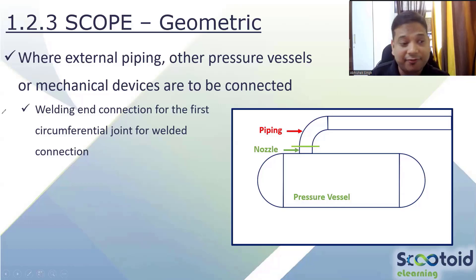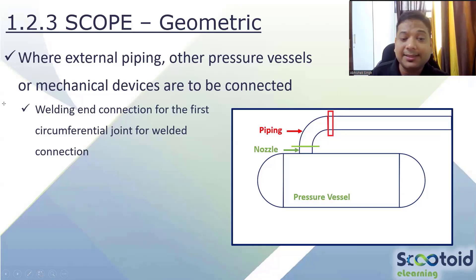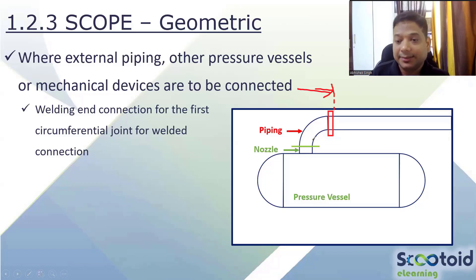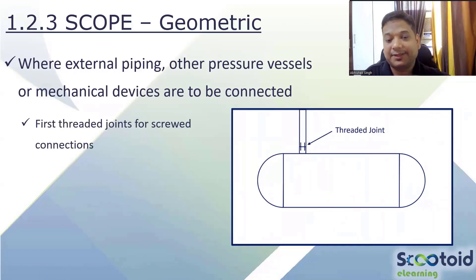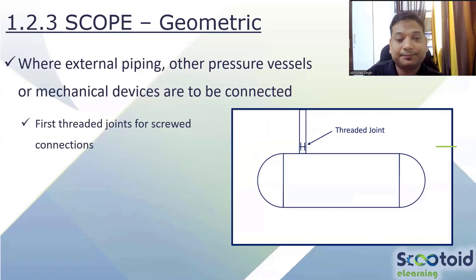The geometrical limit can be extended by the client in the UDS. If the client indicates the limit extends beyond the flange, that point becomes the limit. As per code, if nothing else is specified, the standard boundary applies. If there is a threaded connection instead of a weld or flange, the first threaded connection also becomes the geometrical limit for applying the code.